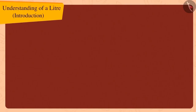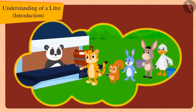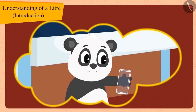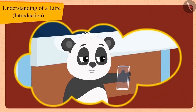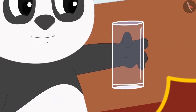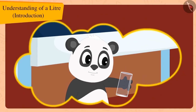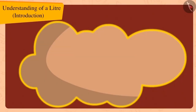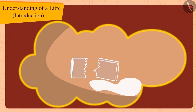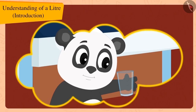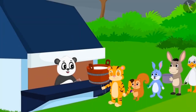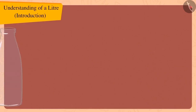Children, do you remember the long line outside Golu's dairy? Golu was very easily selling milk to all the people using his glass up till now. But suddenly, his glass broke yesterday and he had to buy a new glass. Today also, there is a long queue like usual outside Golu's dairy.